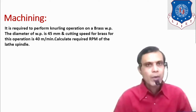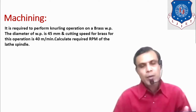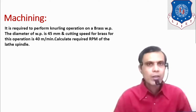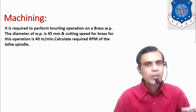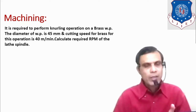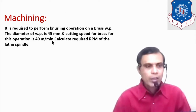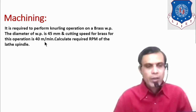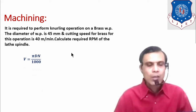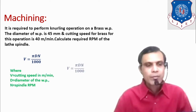From material to material, the cutting speed may vary. For example, if the workpiece material is stainless steel versus aluminium, we cannot run the machine at the same speed for the same operation. Here, for brass with a cutting speed of 40 metres per minute, we use the equation V = πDN/1000, where V is cutting speed in metres per minute, D is the workpiece diameter in mm, and N is the spindle RPM.